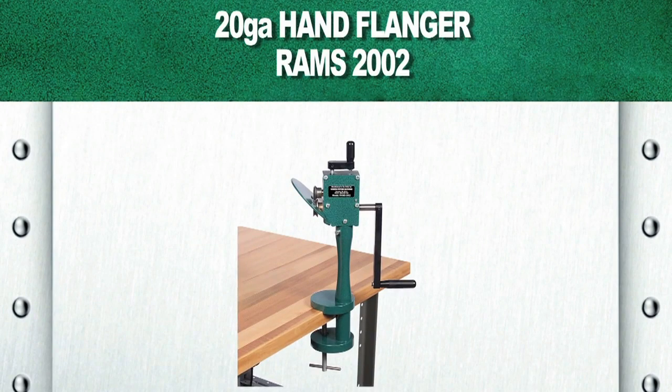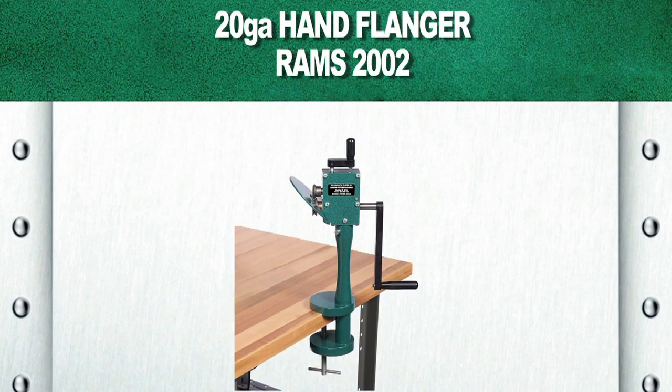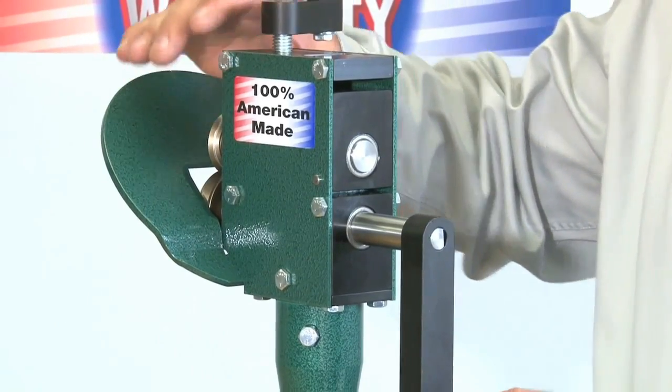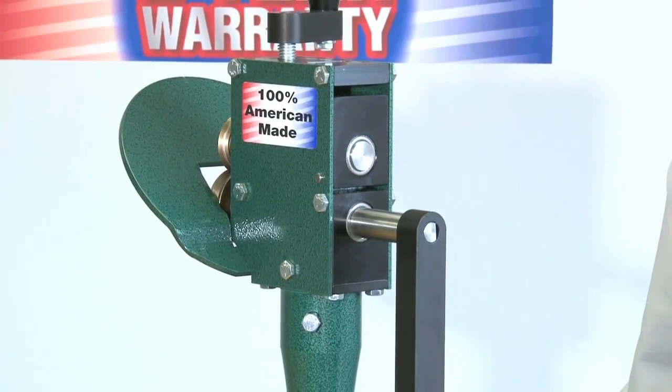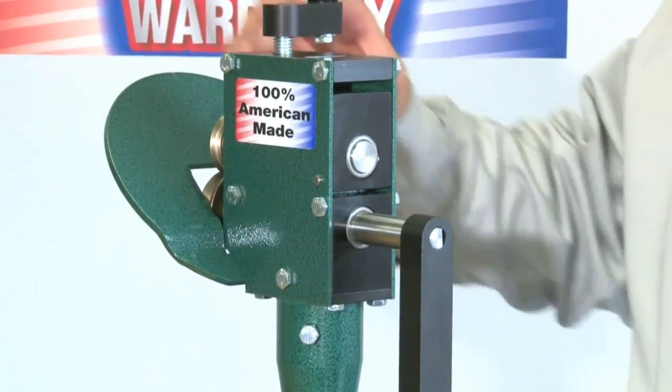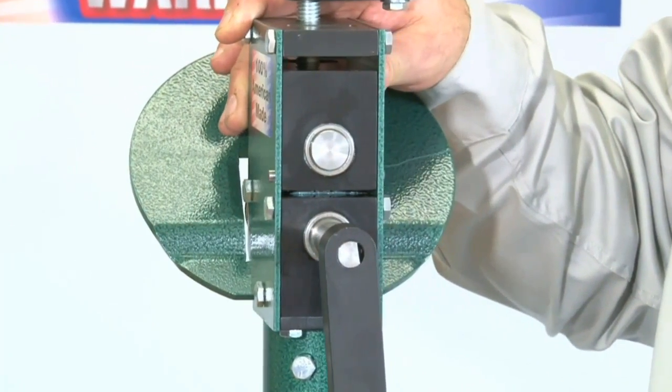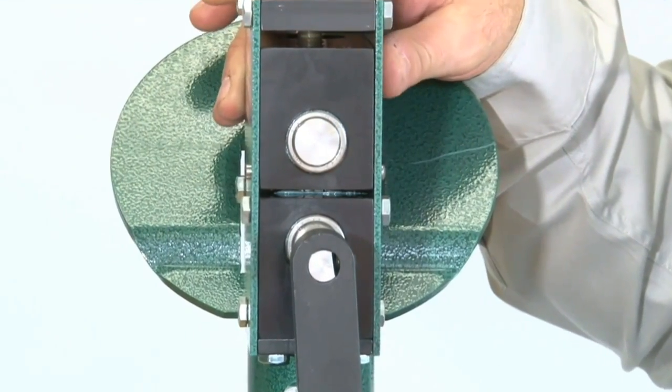RAMS 2002. As with all our RAMS equipment, the RAMS 2002 20-gauge hand flanger carries a standard two-year warranty and is 100% American-made. The RAMS 2002 hand flanger has unique design features which the competition doesn't offer.